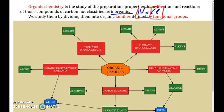With organic chemistry, what we're going to talk about is primarily carbon-based materials. It's going to be carbon covalently bonded to things like hydrogen, nitrogen, and oxygen.